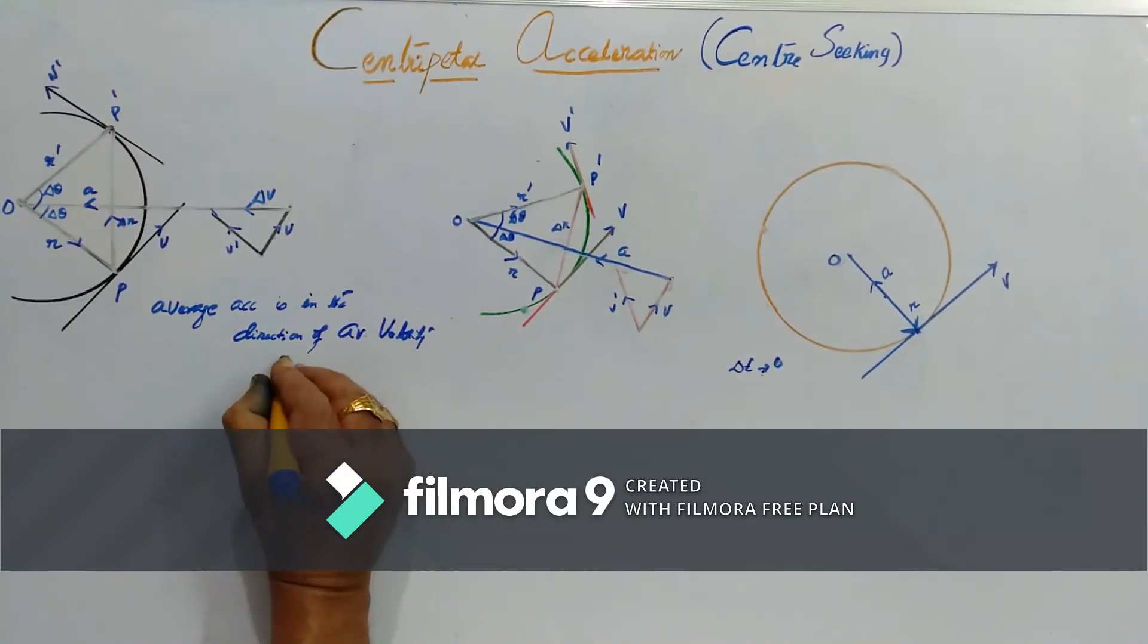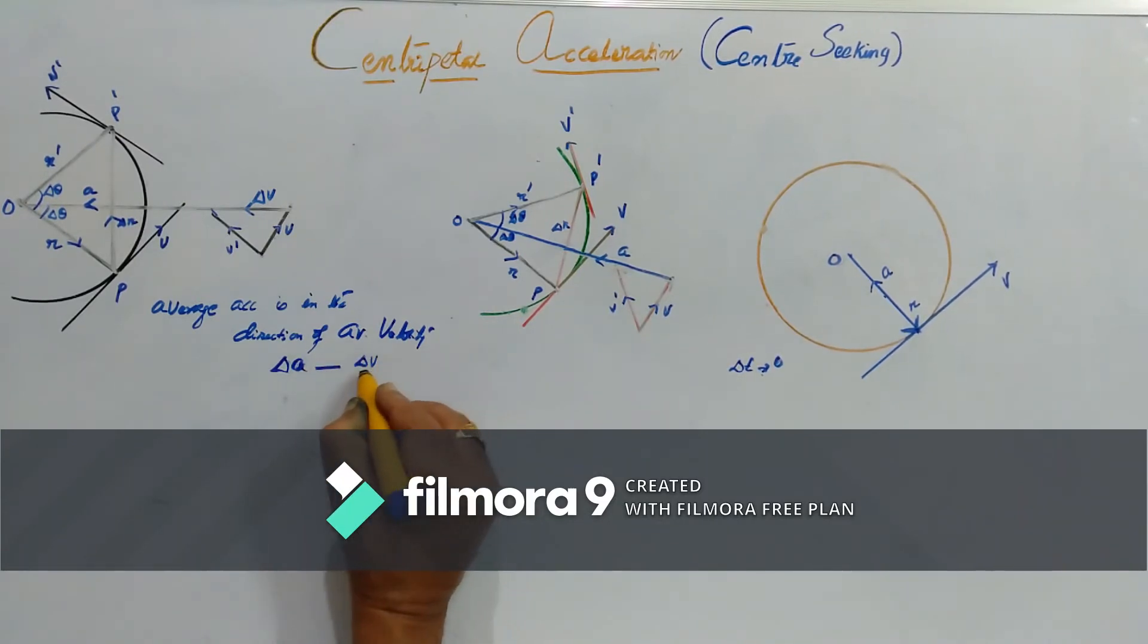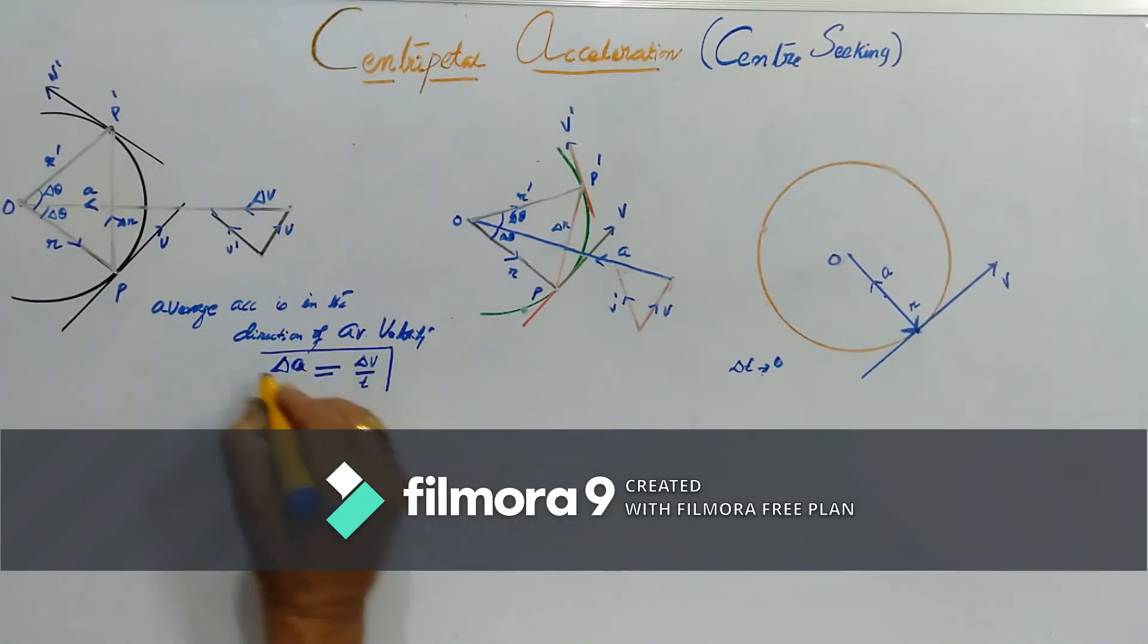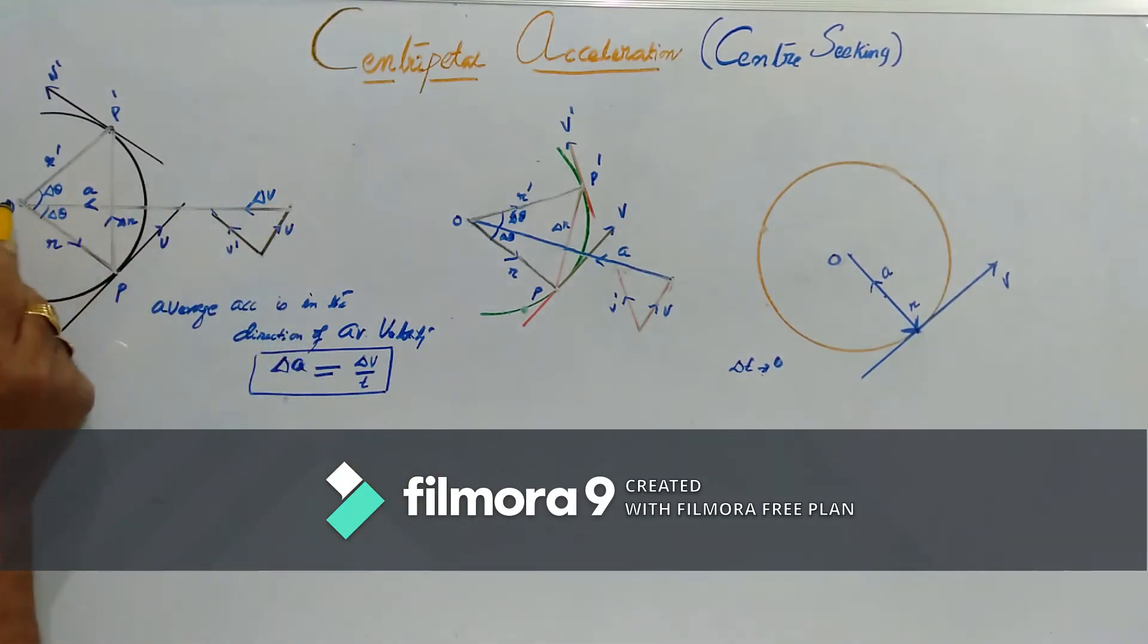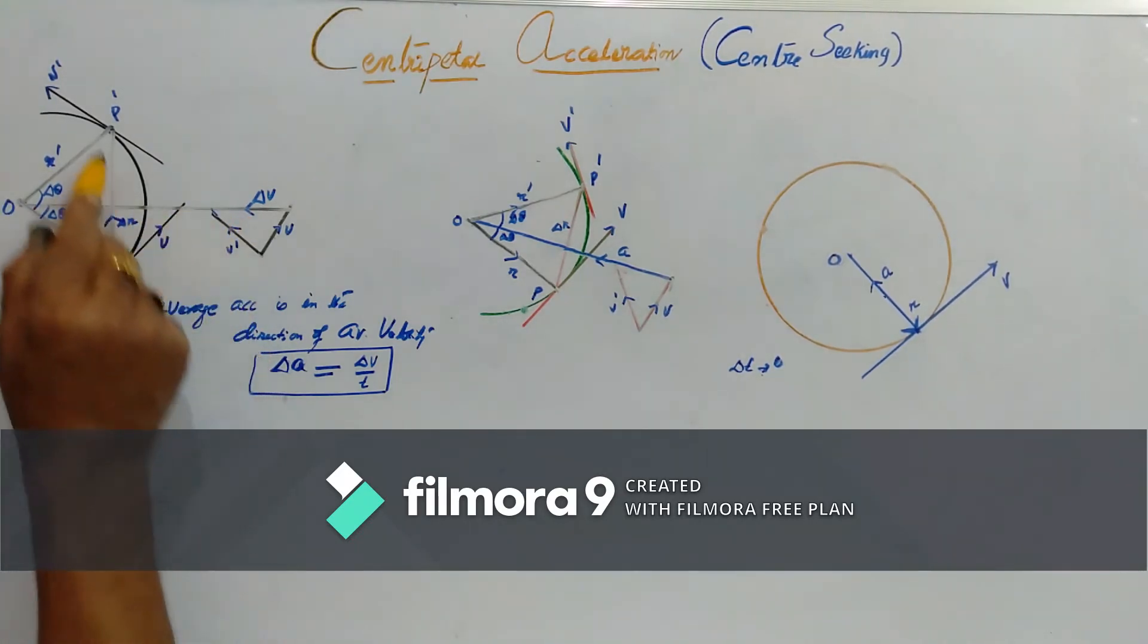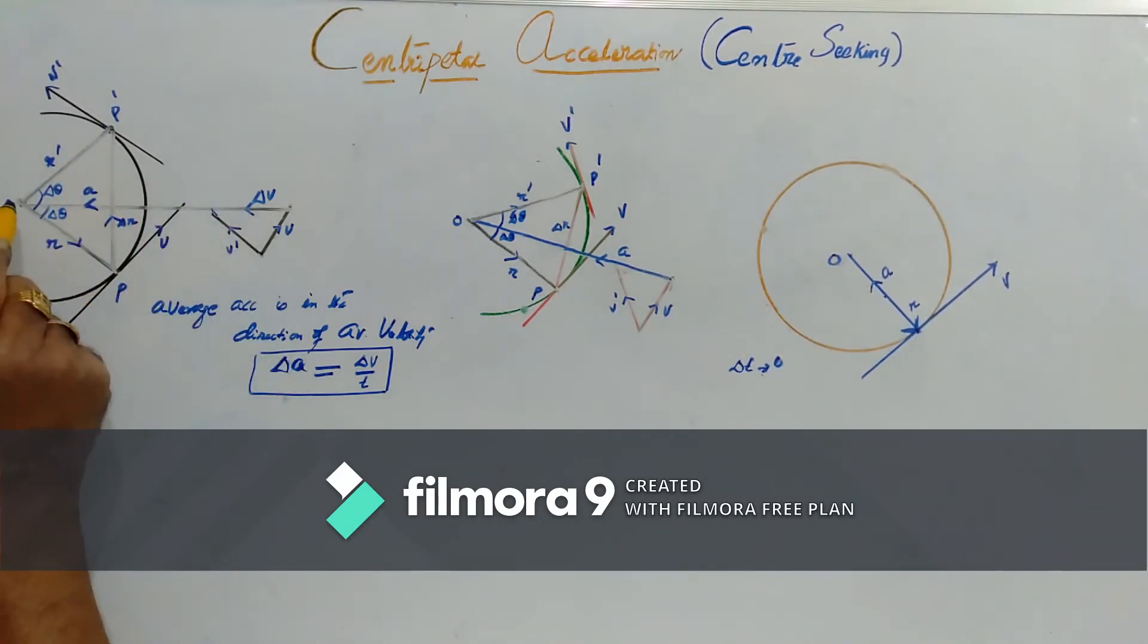Delta A will have the same direction as delta V because delta A is equal to delta V by delta T and we just now talked that delta V vector is bisecting this angle and it is perpendicular to this chord therefore it passes through the center.